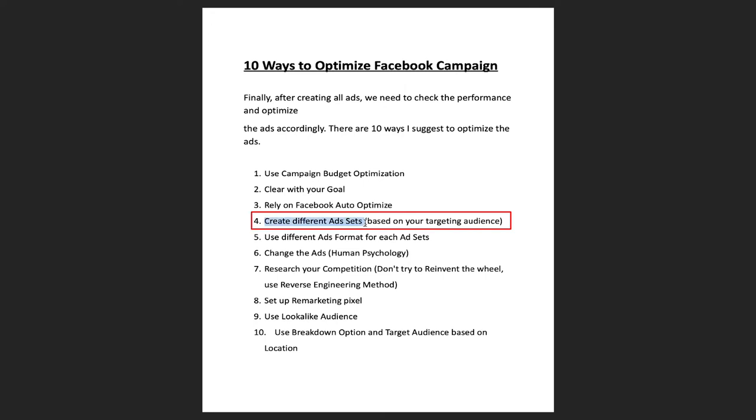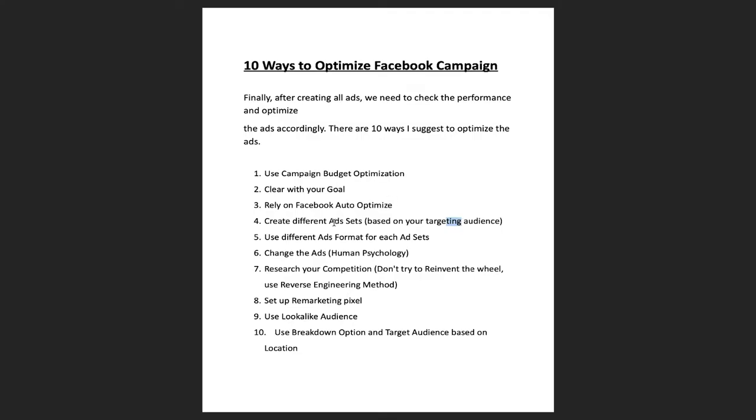The fourth tip is to create different ad sets based on your target audience. Digital marketing is an art and a science — you need to play around with it. If you don't get results, don't get confused or discouraged. Try another audience and keep changing it until you achieve your goal. If the first audience you selected didn't work based on the CTR, change it.